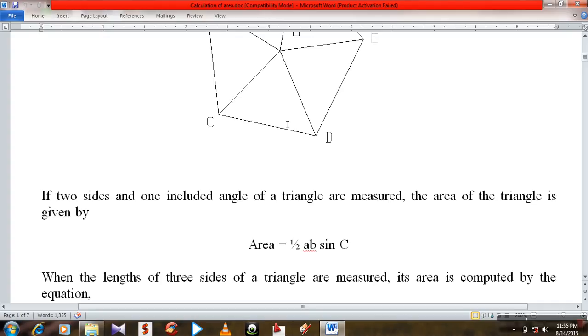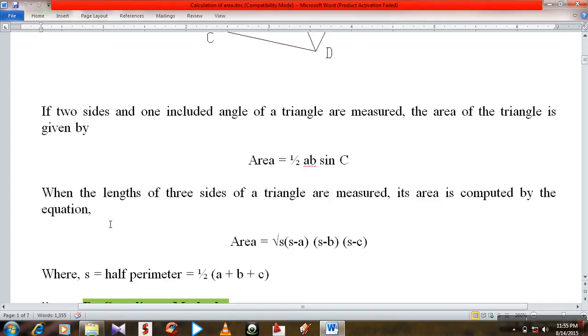So if two arms are known, and an included angle between a and b, then we can calculate area equal to half a b sin c. When the length of three sides of a triangle are measured,